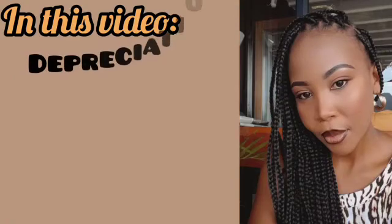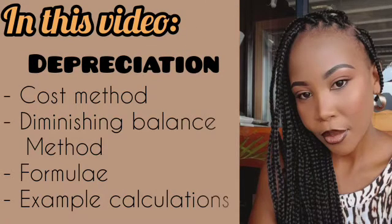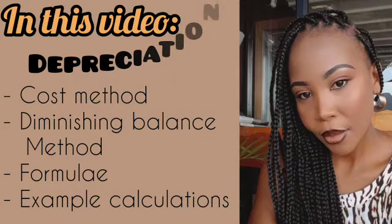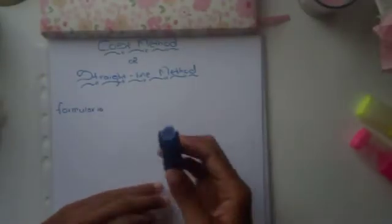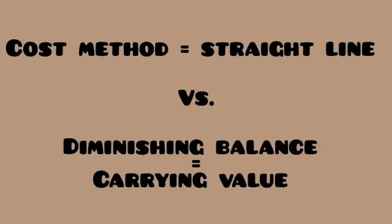In this lesson we are going to deal with the two types of depreciation methods: the cost method and the diminishing balance method. We are also going to look at the formula of both methods and do calculations for both. The cost method is also known as the straight line method, and the diminishing balance method is also known as the carrying value method.